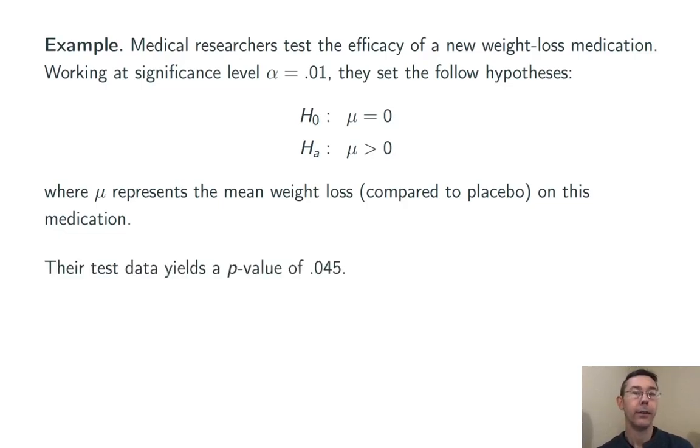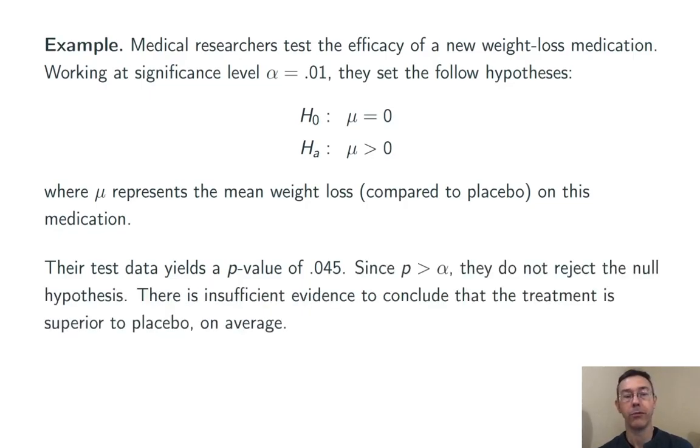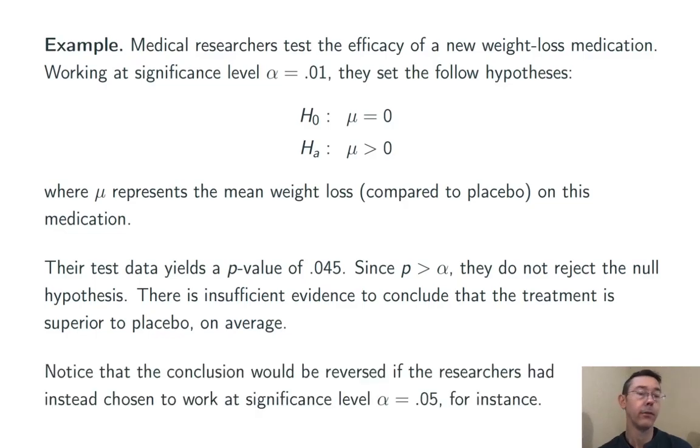Let's say that they go out and get some data, which leads to a p-value of 0.045. In this case, the p-value is greater than the significance level alpha that they set at the beginning of the test, and so they're unable to reject the null hypothesis. There's insufficient evidence to conclude that the treatment is superior to placebo on average.